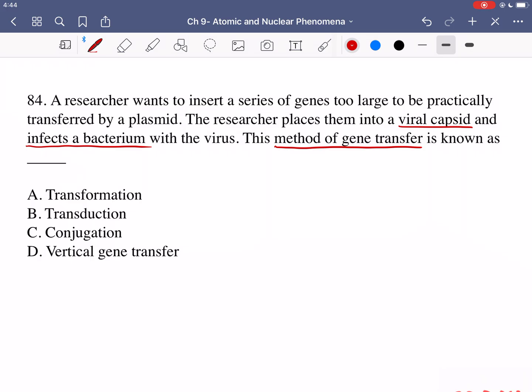Option A is transformation and transformation would be if we use a plasmid. Transformation involves the uptake of genetic information from the environment and therefore once again it would be a plasmid and not some viral intermediate. So transformation would be incorrect. Option B is saying transduction and this is correct. This is when we actually transfer genes using a viral intermediate and that's exactly what happened here. Therefore transduction is the name of the method of gene transfer that we used.